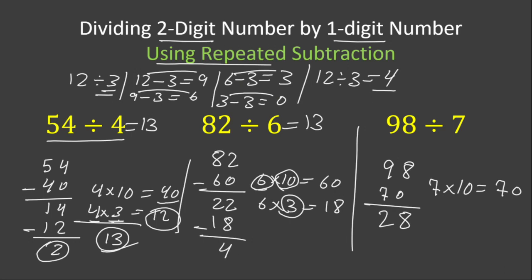We look for a number that should be multiplied by 7 and gives us a number that is either 28 or a number less than 28. 4 times 7 is 28. 28 minus 28 is 0, we don't have any remainder. How many times did we subtract 7 from 98? We subtracted 14 times. 10 plus 4 is 14.